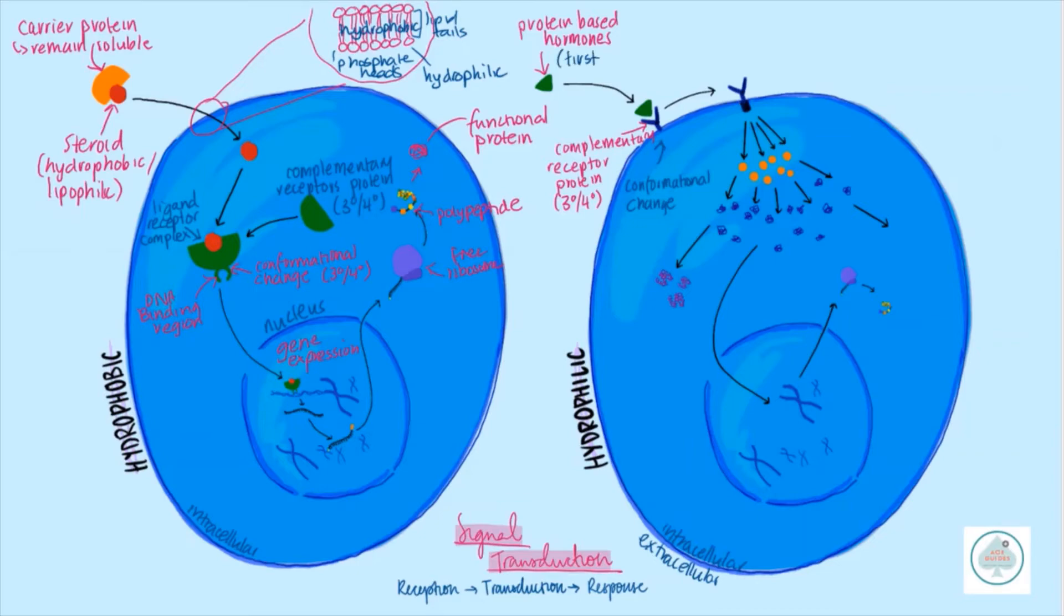So instead, we have what we call the first messenger. Okay, we've got the first messenger which attaches to the receptor on the extracellular side of the plasma membrane, that then undergoes a conformational change in the tertiary or quaternary structure.